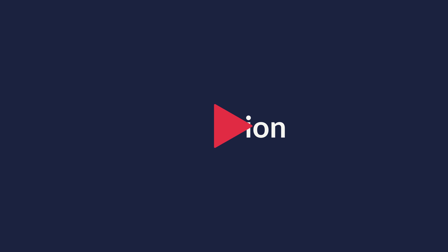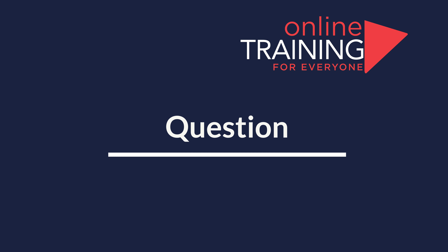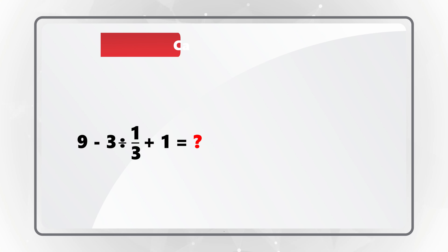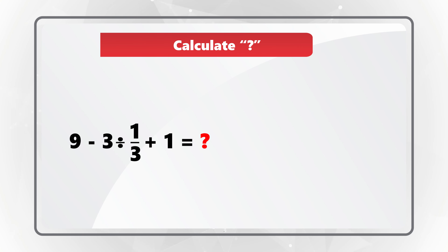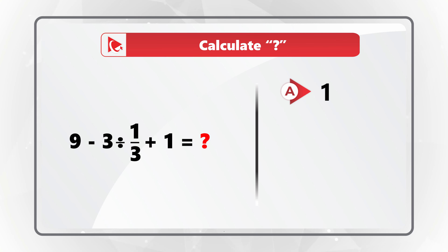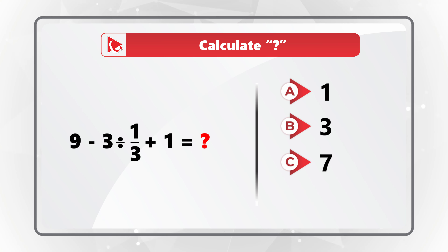Here's an amazing question to test your math skills. You're presented with a simple expression and you need to calculate its value. You have four different choices: A — 1, B — 3, C — 7, and D — 9. Give yourself a little bit of time to see if you can calculate the solution.